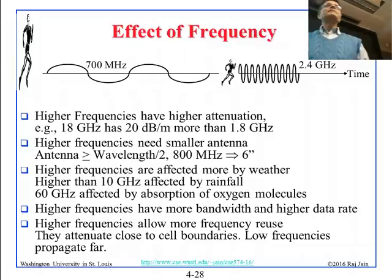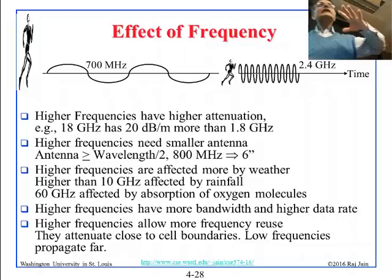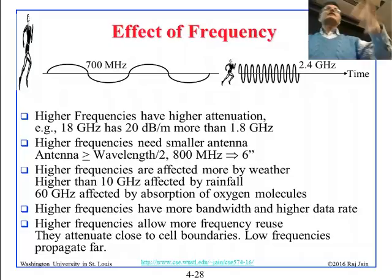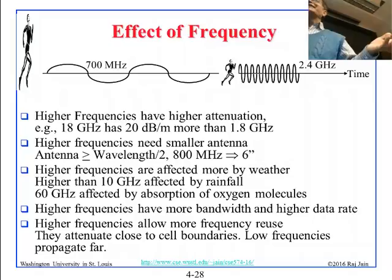Everything is related to wavelength. Why do we use high frequency at all? Because we do not have low frequency available anymore. The world started with the lowest frequencies — communications began at 1, 2, 30 MHz. When nothing was left at low frequencies, we moved to 40, 50, 100, 200 MHz, then to gigahertz. Now we are going to terahertz — not because it is our first choice, but because it is what is available. We are using unclaimed space.